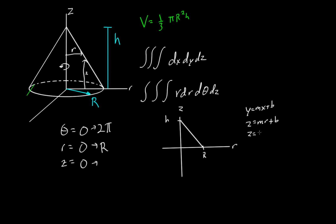And what's our equation for our slope? That's rise over run. So we're going negative h over capital R times r. h is our rise, capital R is our run. We're going downward, so the slope is negative, times r plus our z intercept of h. Another way to rewrite this is z equals h minus h over capital R times r. So that's actually what we're going to be integrating to.